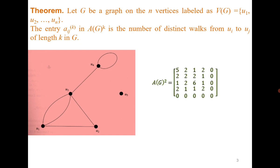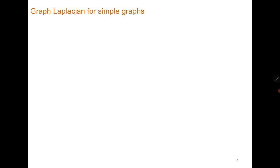We discussed a very important theorem in the last class that gives us the number of distinct walks of length k between any pair of vertices. We simply need to compute A raised to the power k, where A is the adjacency matrix of the given graph. For example, the number of walks of length 2 from u1 to u1 is 5, and therefore we computed A squared.